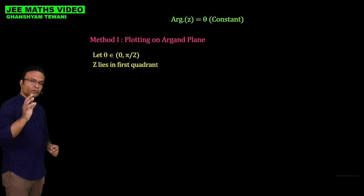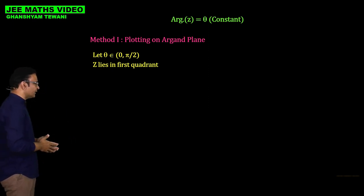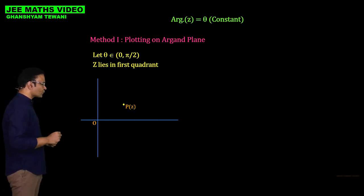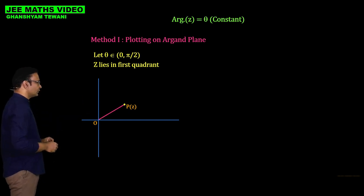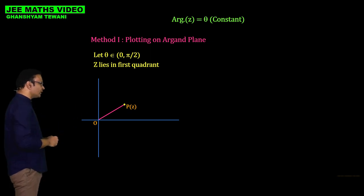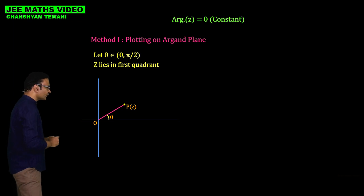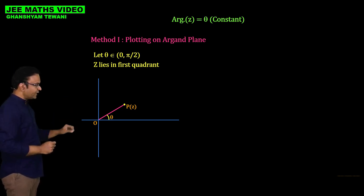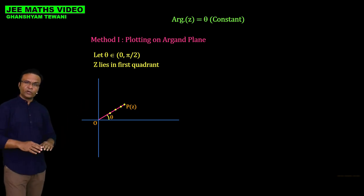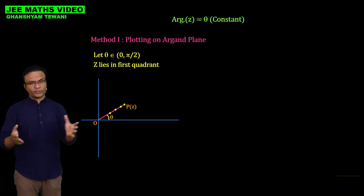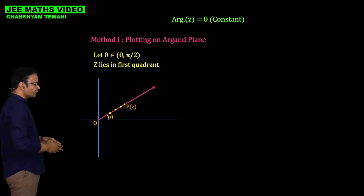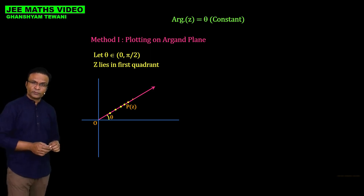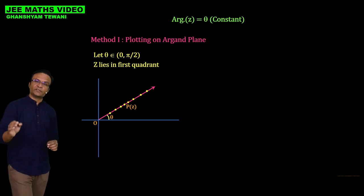So, let us set up the Argand plane. Suppose point P in the first quadrant has complex number z. Join P to the origin. The line segment OP makes an angle theta with the positive real axis, which is the argument of the complex number. If we take z at different positions along this ray, the argument of each of those complex numbers is the same value theta. So if we extend OP to infinity, every complex number on this ray has argument theta.